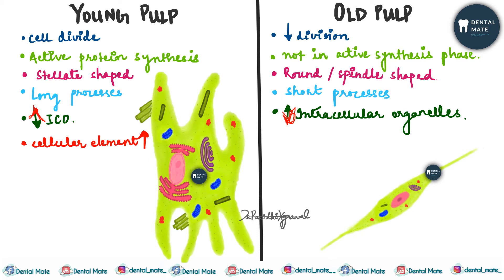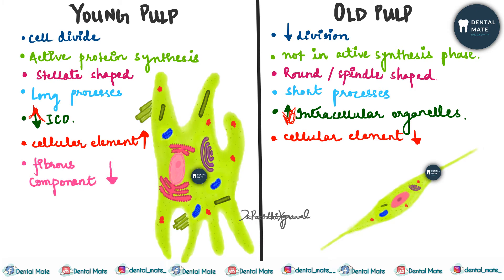There is a higher cellular element in young pulp and lesser cellular element in old pulp. The fibrous component is less in young pulp, whereas in old pulp the fibrous component predominates.